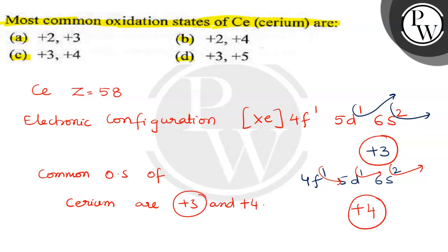Okay, so koonsa option sahi hoote hai hamara? Option C: +3 and +4. So this is the correct answer. Hope you understood, good luck.